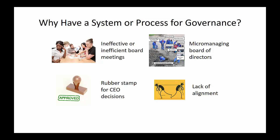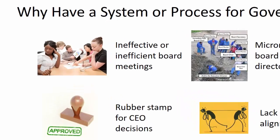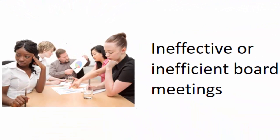The policy governance system was designed in part to overcome that problem and to overcome some common board dysfunctions. I've listed a few here which most people who have been on boards are likely to recognize. First are ineffective or inefficient meetings. The purpose of the meeting may not be clear, and there might be lots of interesting discussion going on, but you're left at the end of the meeting wondering if you really accomplished anything.